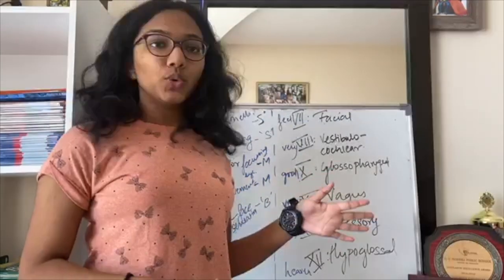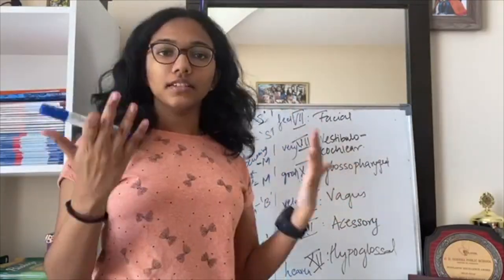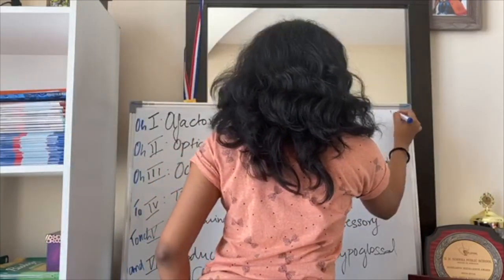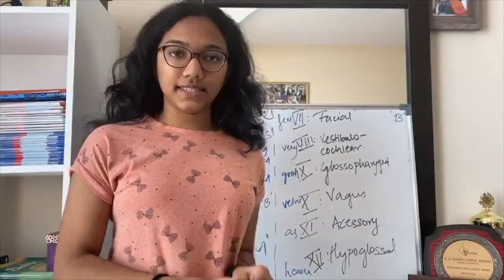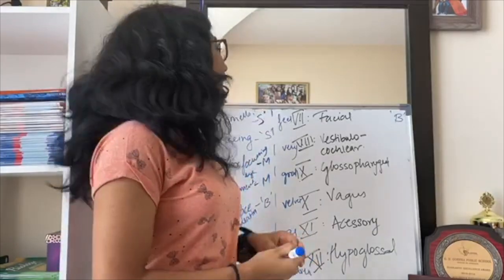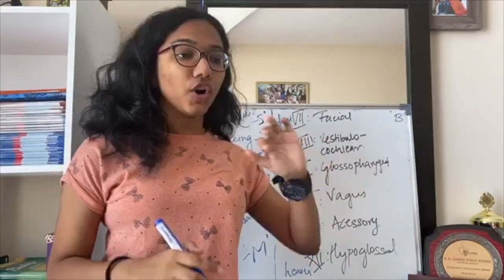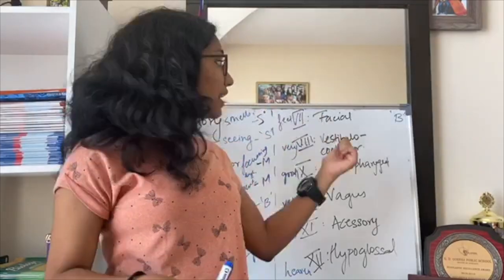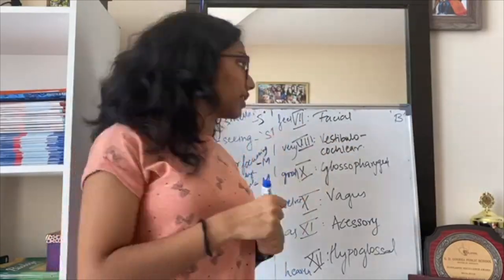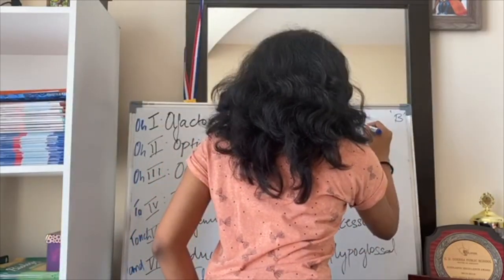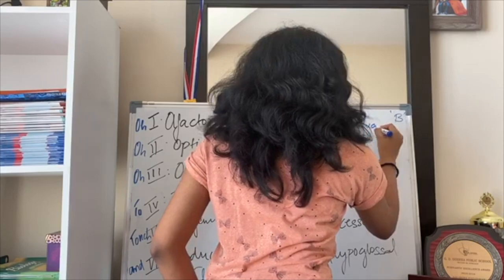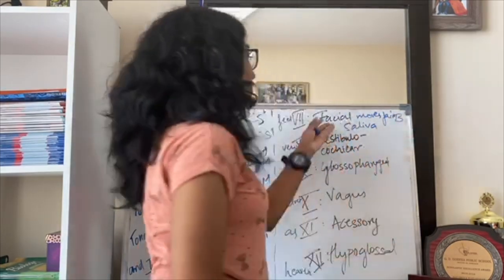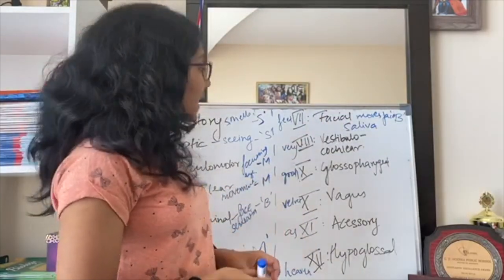The seventh nerve is the facial nerve, which is both motor and sensory. It is used for sensations of the face, moving the face, salivation, and tear production. You can figure out the face-related functions just from the name.